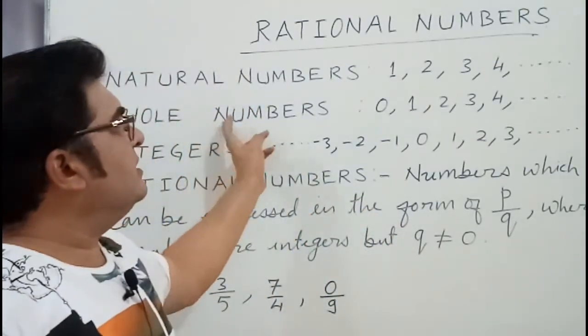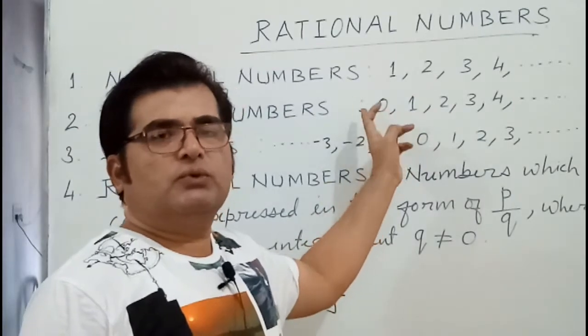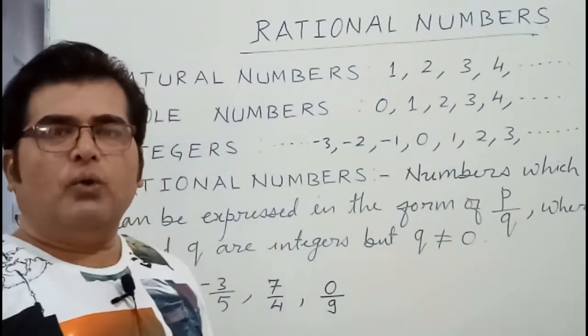Then whole numbers are there. With natural numbers we have 0 also. So 0, 1, 2, 3, 4, 5 up to infinity are the whole numbers.